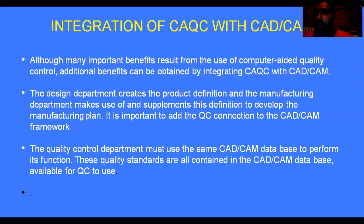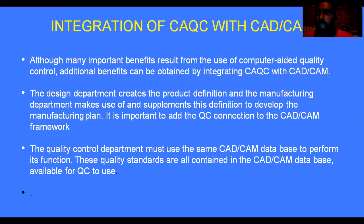Previously, CAD, CAM, and quality control had individual and separate functions. But now, with the computer involved in quality control, it becomes fully automatic. Any defects in the object are sent back to CAD, which applies corrections. Then it is sent to CAM for manufacturing. After manufacturing, the product is sent to CAQC for testing and inspection. If defects are found again, it is sent back to CAD — making it a cyclic process. The total information flows from CAQC to CAD to CAM and back, forming a fully automatic manufacturing process.